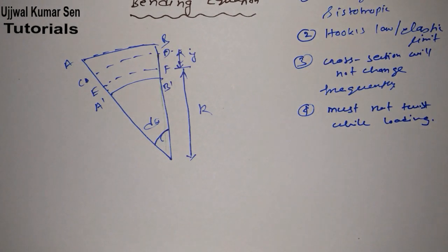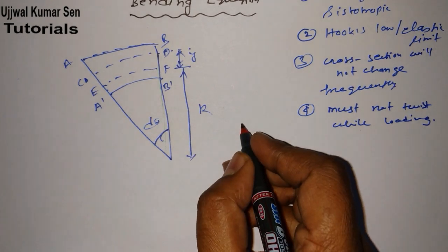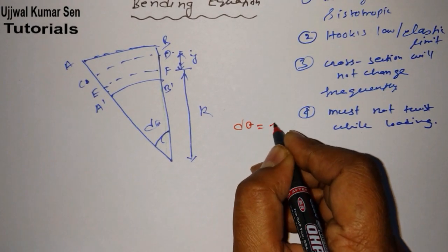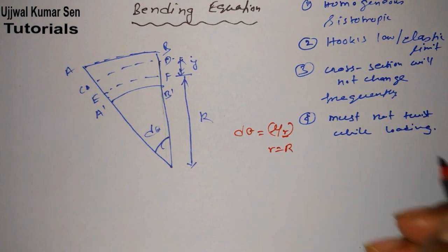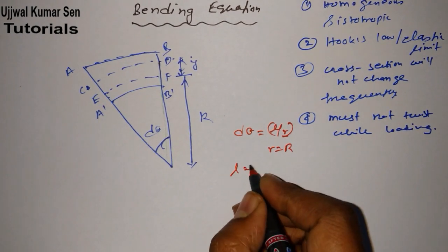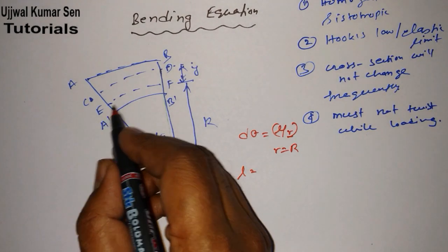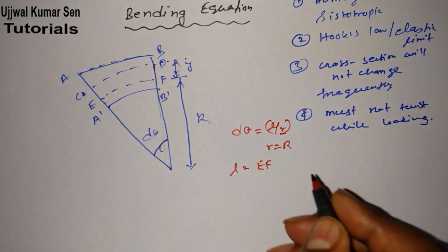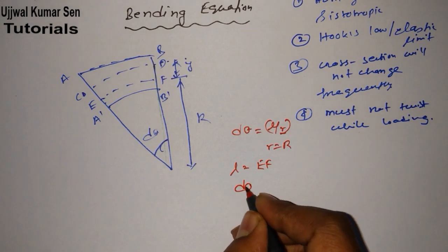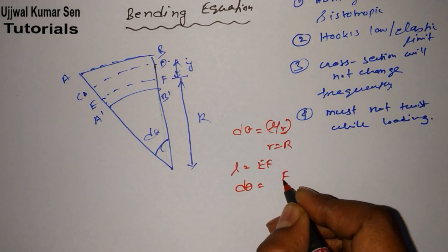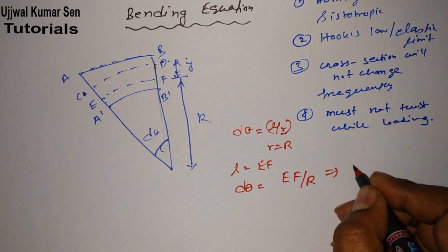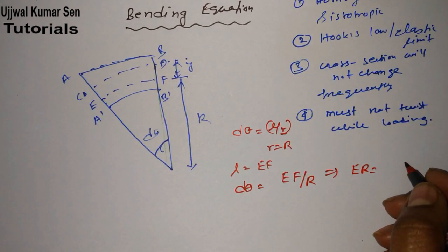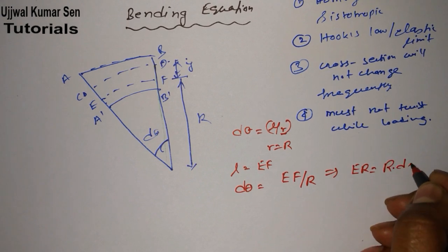Once you understand this diagram it is really simple. We use the formula from class 10: dθ = l/r. Here R is the radius of curvature, and DL equals EF. So we can write dθ = EF/R, which gives us EF = R·dθ.